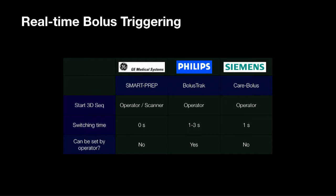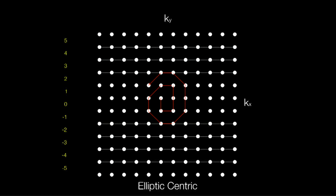The general means of bolus triggering in real time involve having your radiographer or technician watching the contrast coming in using a low-resolution, multiply-updated image. GE call it SmartPrep, Philips calls it Bolus Track, Siemens calls it Care Bolus. Another way to sample the centre of K-space earlier is to use a spiral or elliptical centric K-space encoding, starting at the centre of K-space and then working outward.